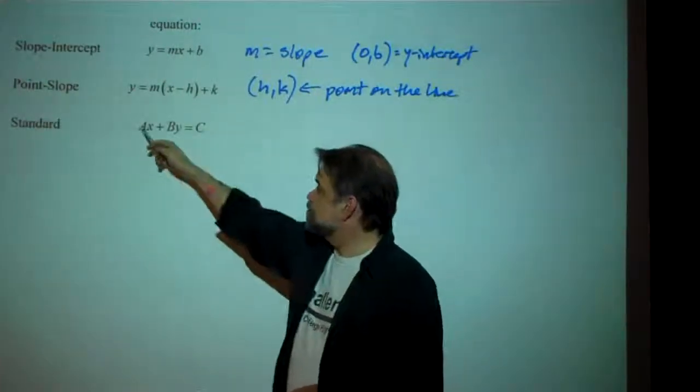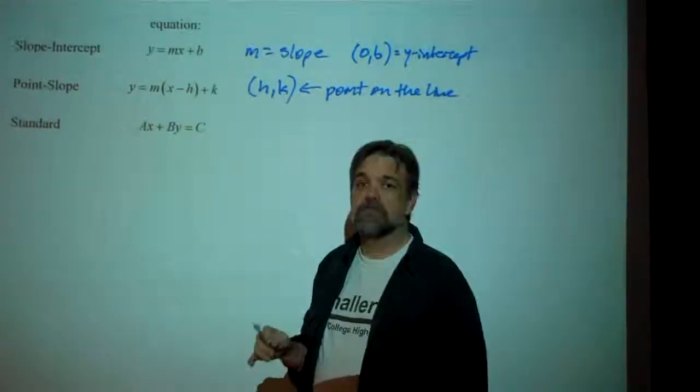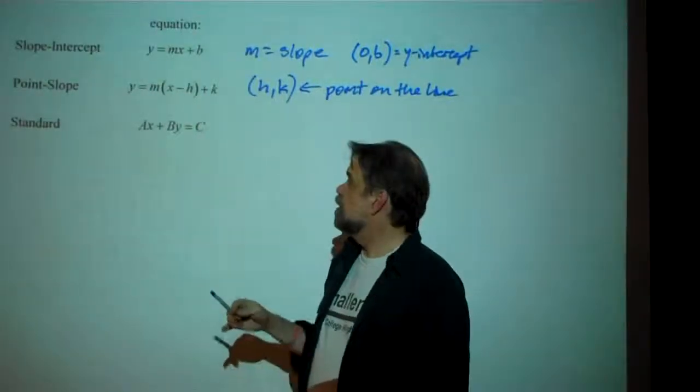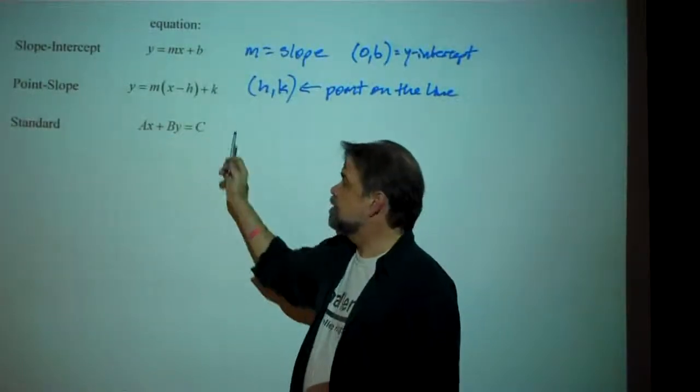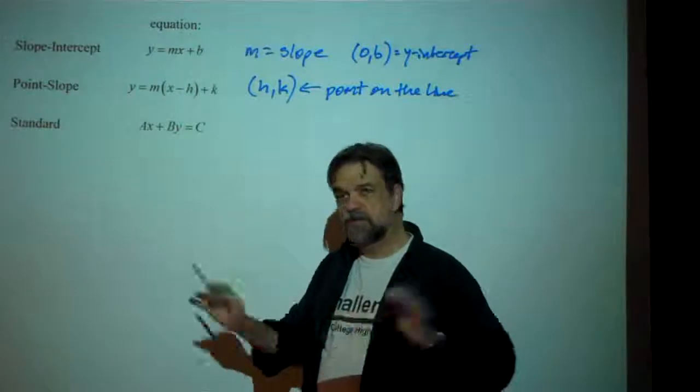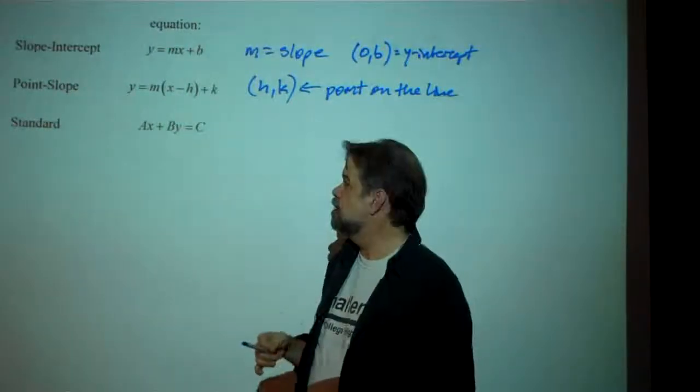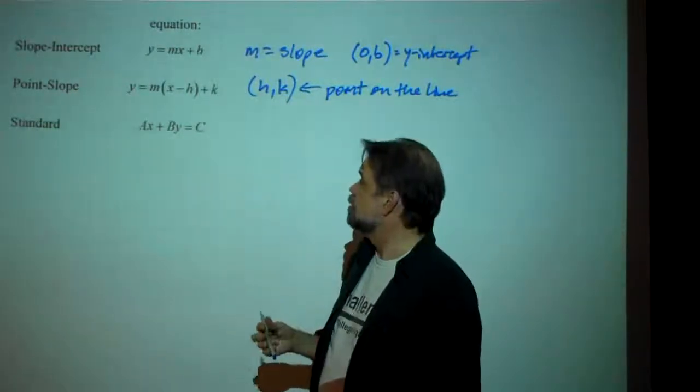But a, b, and c are always integer values. We don't use fractions there. If we do have a fraction, then we would just multiply both left and right sides by the denominator to get rid of the denominator and have whole numbers or have integer values for a, b, and c.